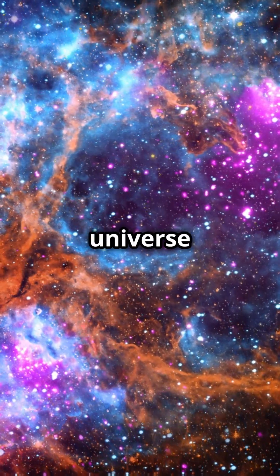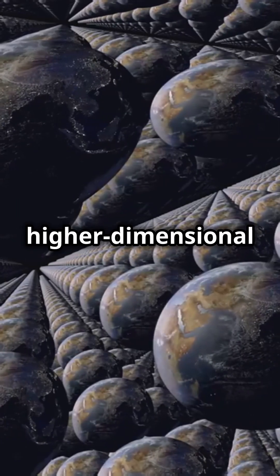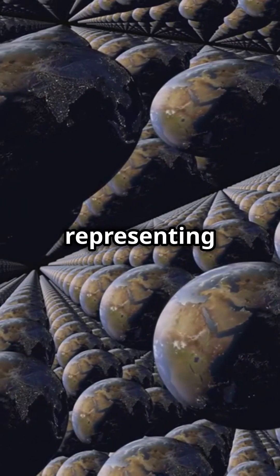This theory suggests that our universe is a four-dimensional brane, three spatial dimensions plus one time dimension, embedded in a higher dimensional bulk with other branes, each representing a separate universe.